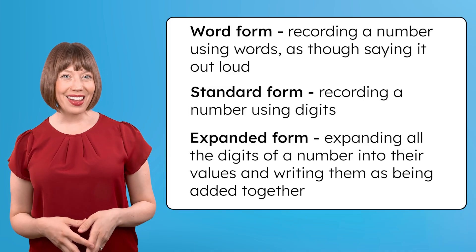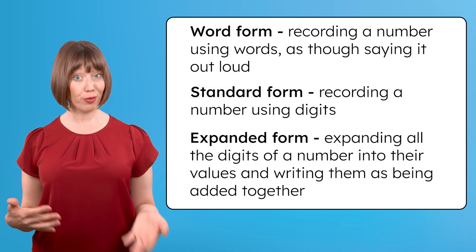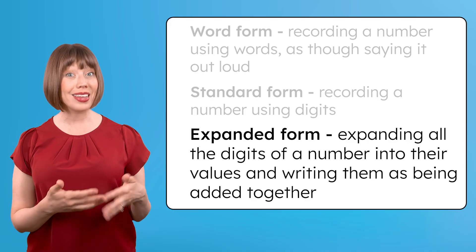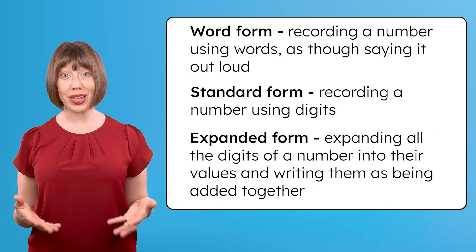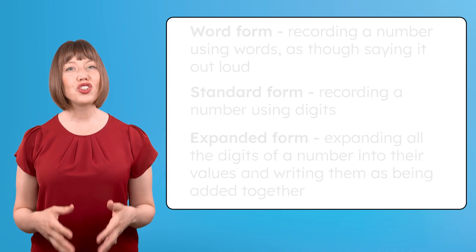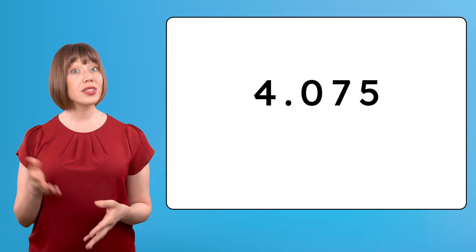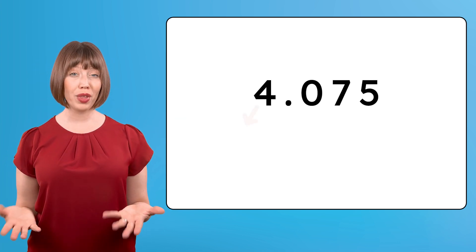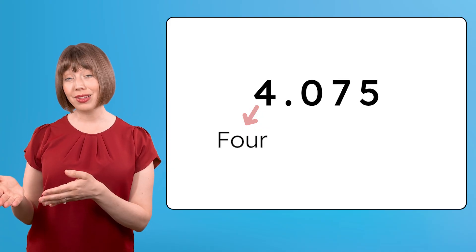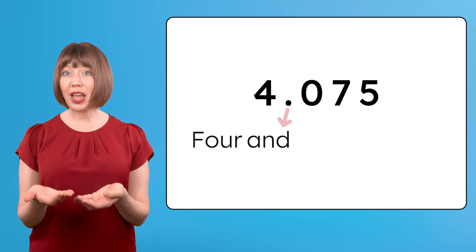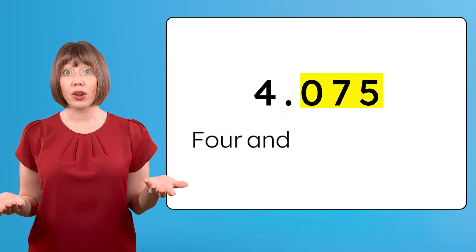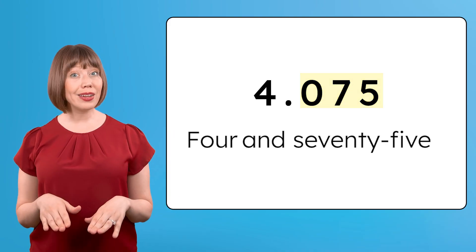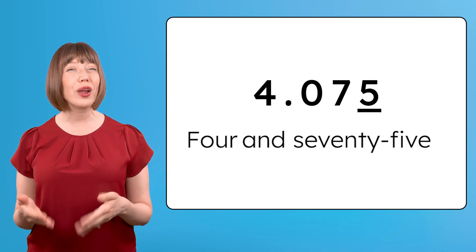For our challenge today, we also need to be able to represent decimal numbers in different forms — whether it's using words, digits in standard form, or breaking down the value of each digit in expanded form. Showing a number in multiple ways helps us truly understand what it represents. To show a decimal in standard form, we use digits and a decimal point. To represent a decimal number in word form, read the whole numbers to the left of the decimal, then say AND for the decimal point, and read the numbers to the right of the decimal like we would a whole number. How do we read these digits? Right — seventy-five.